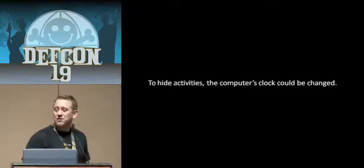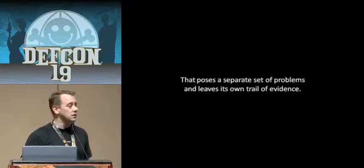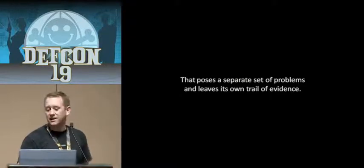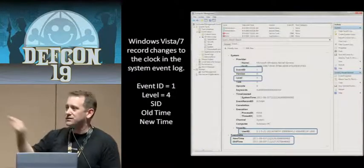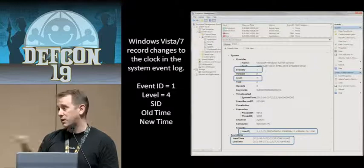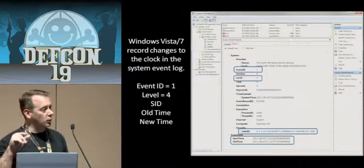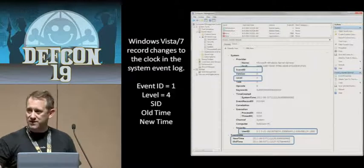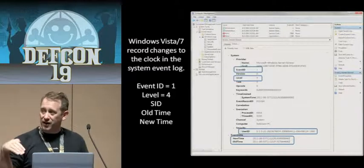But doing that has a certain amount of problems. First, you need to have access to the system clock, or you have to have the rights. Second, newer versions of the operating systems are now recording these events in the system log files. Windows 7 and Windows Vista now record Event ID number one at level four to show the time was changed, showing old time and new time.